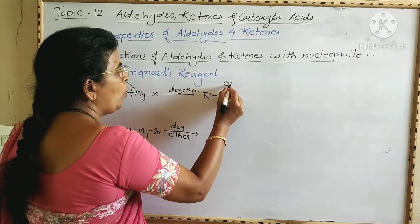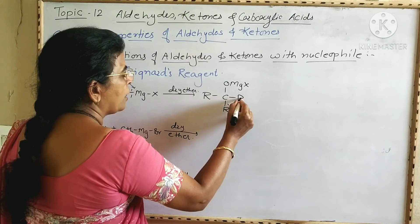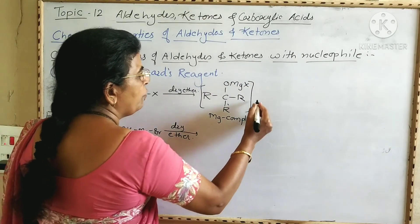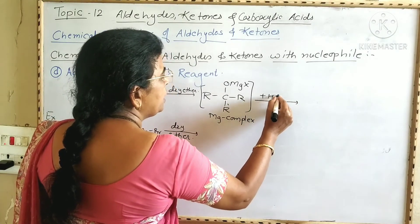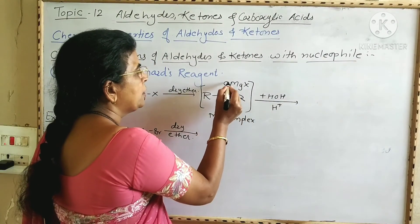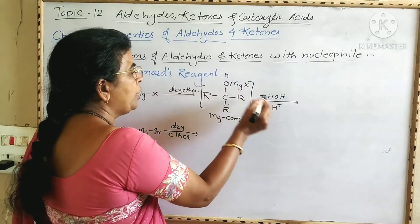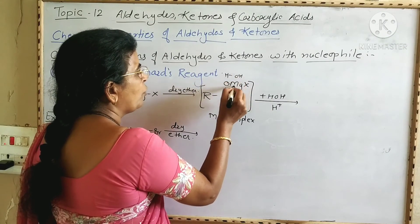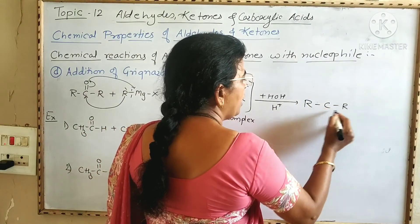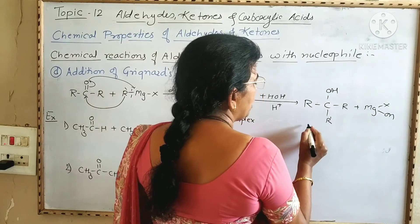The magnesium complex undergoes acid hydrolysis — hydrolysis carried out in acidic medium. The O-MgX bond breaks; hydrogen from water gets attached to the oxygen atom and OH from water gets attached to Mg, to form R-C(R)(R')-OH plus MgX(OH). This product is a tertiary alcohol. So ketones, when treated with Grignard's reagent, give tertiary alcohol.